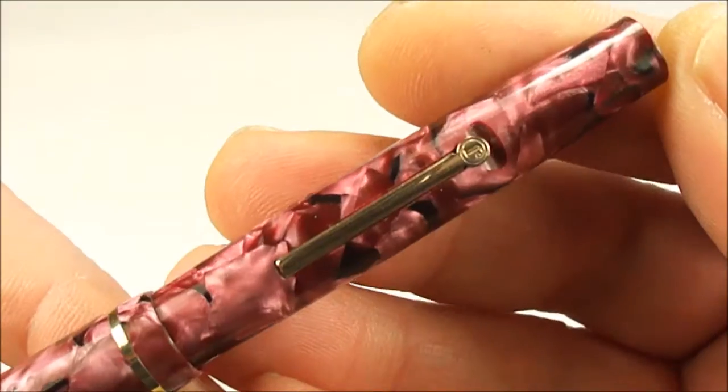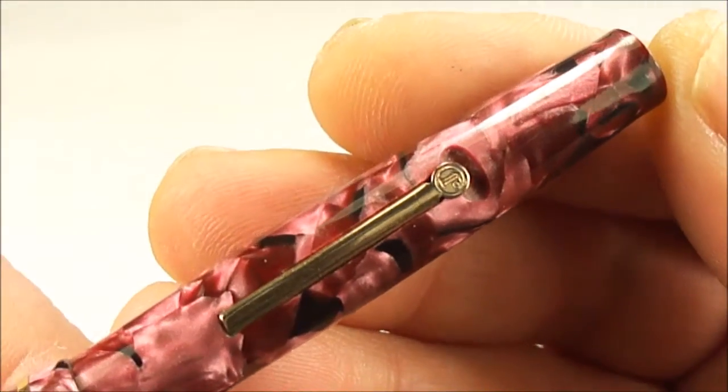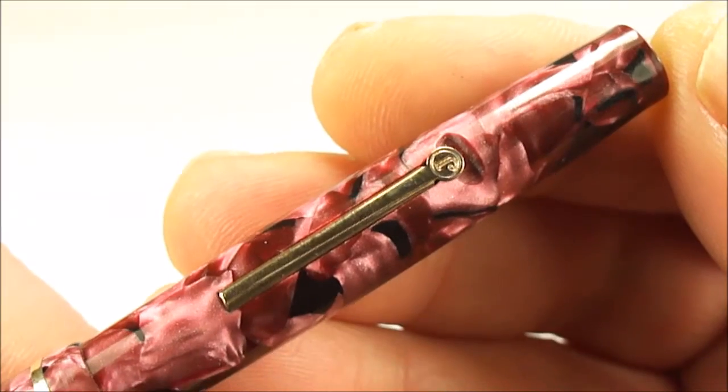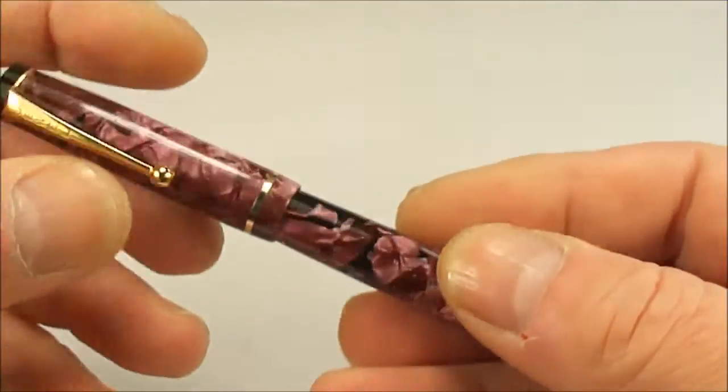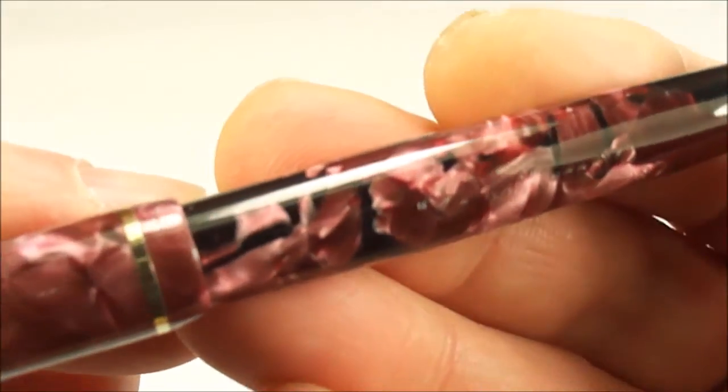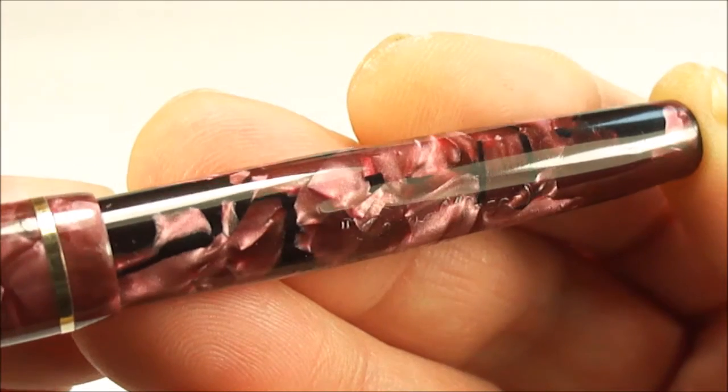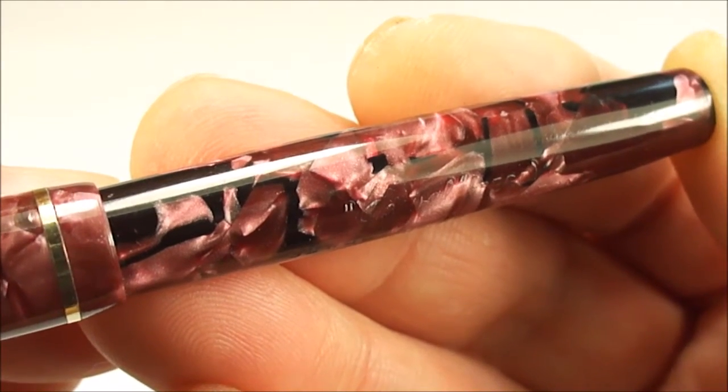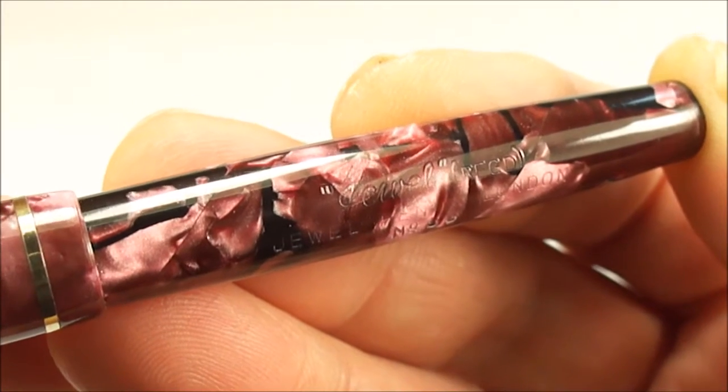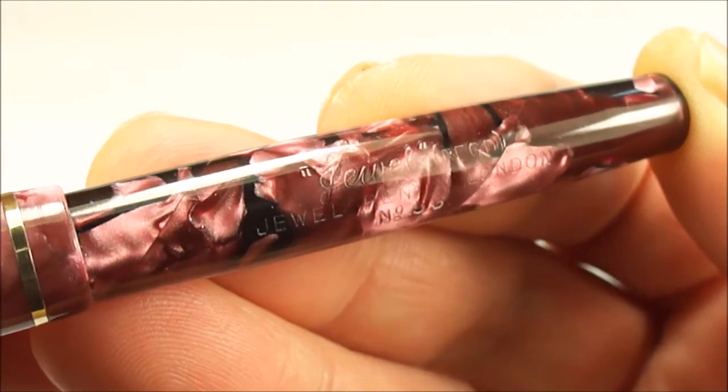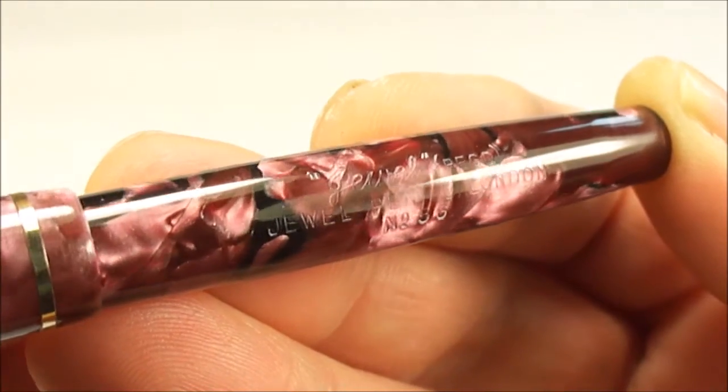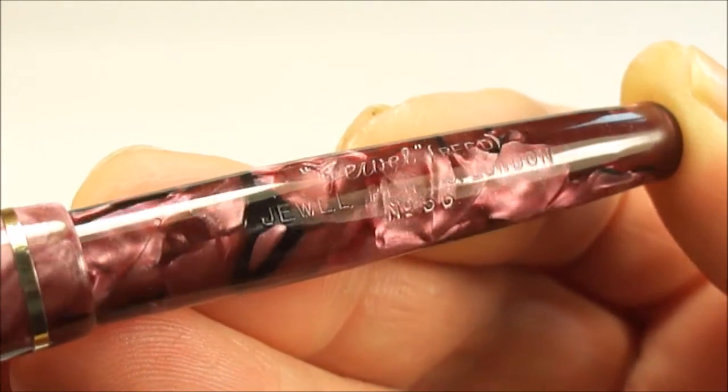If we take you to the barrel, you can see it's got quite a long lever. At the end of the lever you'll notice the word 'J' again, which represents the Jewel Pen Company. The barrel has a lovely clear imprint that reads 'Jewel Registered, Made in England,' and then the number 56 at the very bottom.